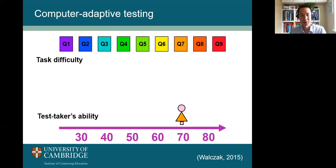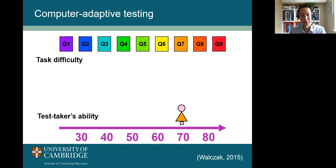Now we are moving to the assessment context. This is computer adaptive testing, which we apply to the LinguaSkill reading test. In this sort of test, each candidate sees different sets of items, and the difficulty of items changes based on performance on the previous item. The advantage of adaptive testing is that it's usually shorter than linear testing. In an adaptive test, you are always given items appropriate to your proficiency level — not too difficult, not too easy. This increases the precision of test results, avoids cheating because each candidate sees different items, and gives candidates a more positive test-taking experience.